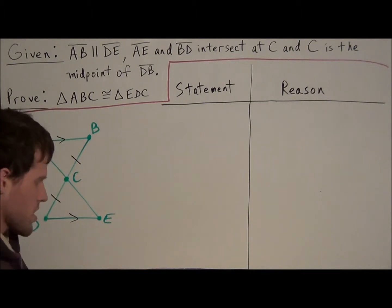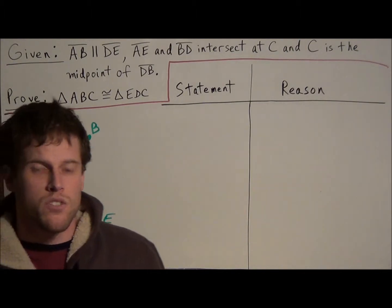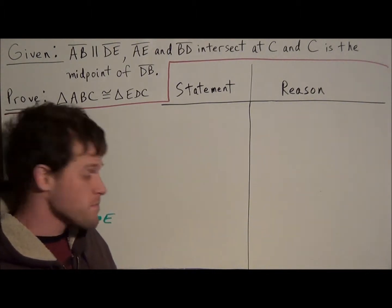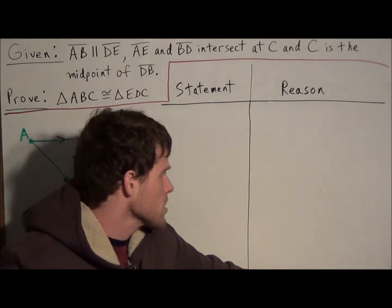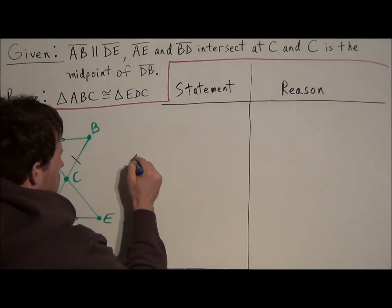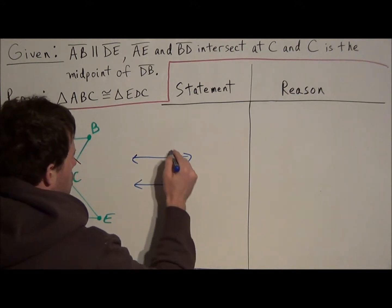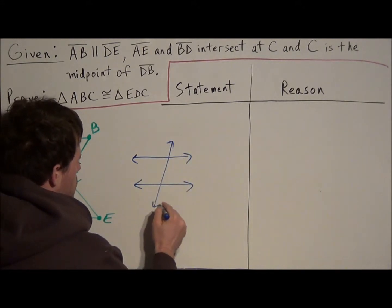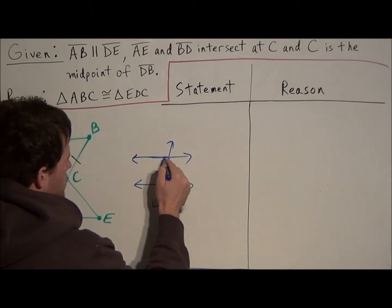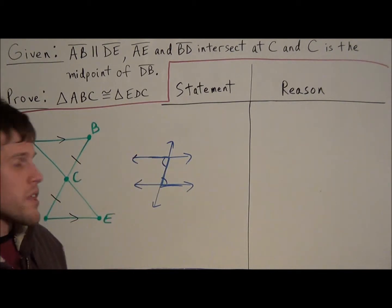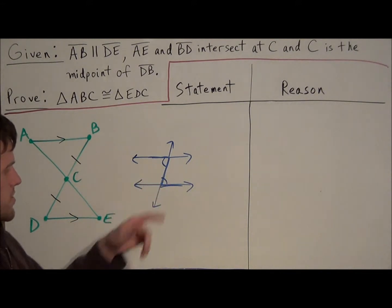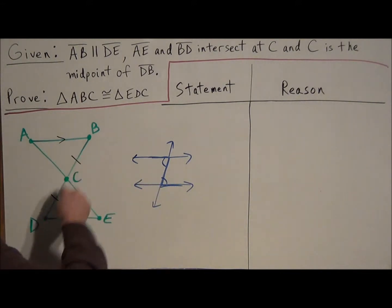Once we get to this stage it may be difficult to see what to do next. When you get stuck, think about why they told you certain information. Since AB and DE are parallel, think back: when parallel lines are cut by a transversal, look for the Z-shape. That Z-shape tells us we have alternate interior angles, and those angles are congruent.